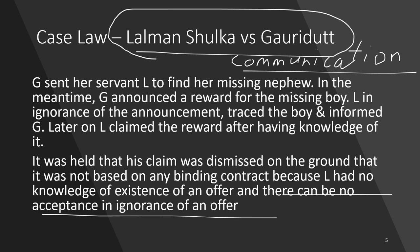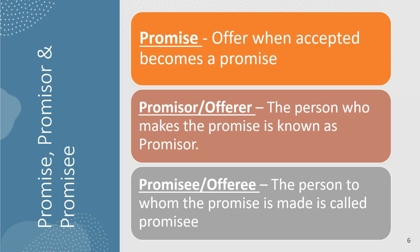Next are the terms promisor and promisee. An offer when accepted becomes a promise. The person who makes the promise is called the promisor, and the person to whom the promise is made is called the promisee. For example, if I say I will buy your car for rupees 1 lakh and you accept, this becomes a promise — I am the promisor and you are the promisee. These terms are used interchangeably in various books and notes.